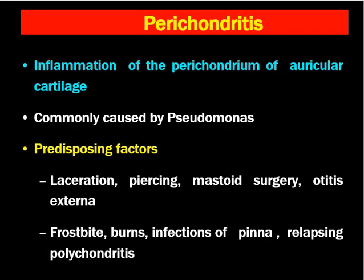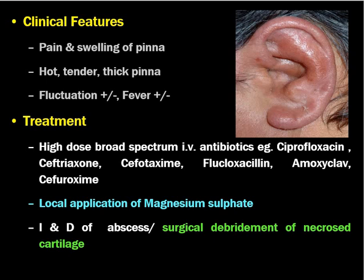Perichondritis is defined as inflammation of the perichondrium of the auricular cartilage, commonly caused by Pseudomonas. The predisposing factors are laceration of the pinna, piercing of the pinna involving the cartilage, after mastoid surgery when the incision is made close to the cartilage, during myringoplasty or otitis externa. During myringoplasty, we have to cover the cartilage, otherwise there may be perichondritis. Insect bites, burns, infections of the pinna, and relapsing polychondritis may also lead to perichondritis. The patient presents with pain and swelling of the pinna, usually after some trauma, wounds, physical assault, or insect bite.